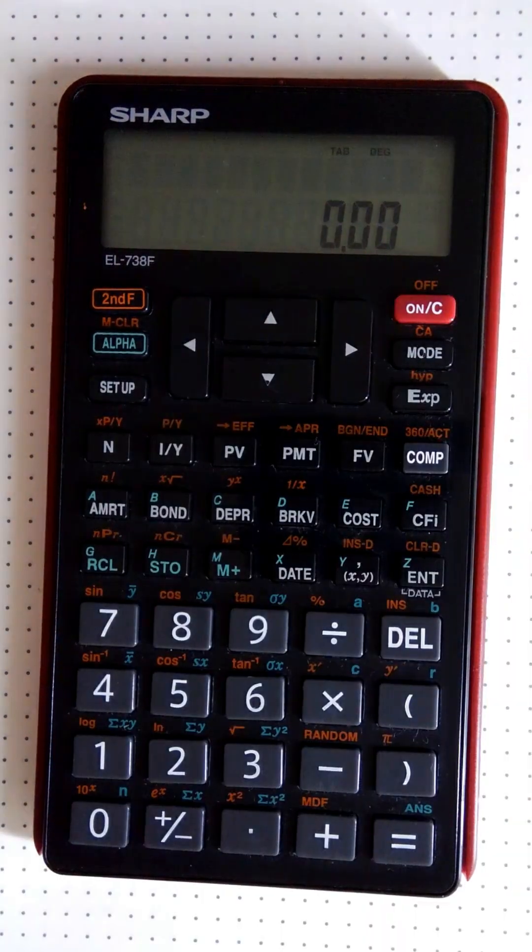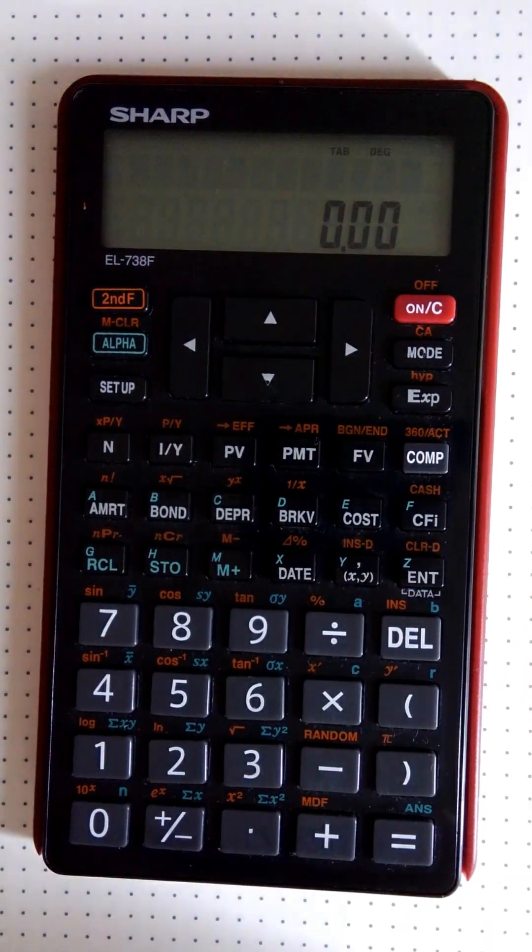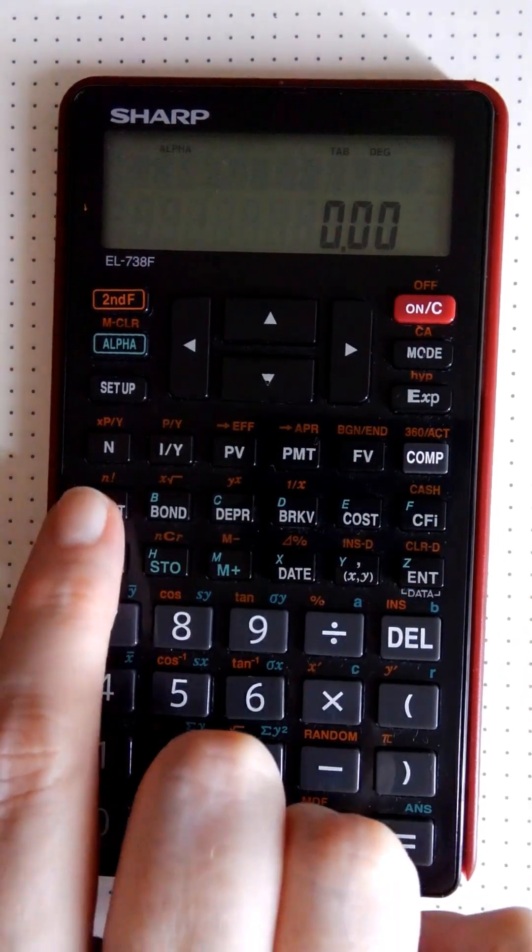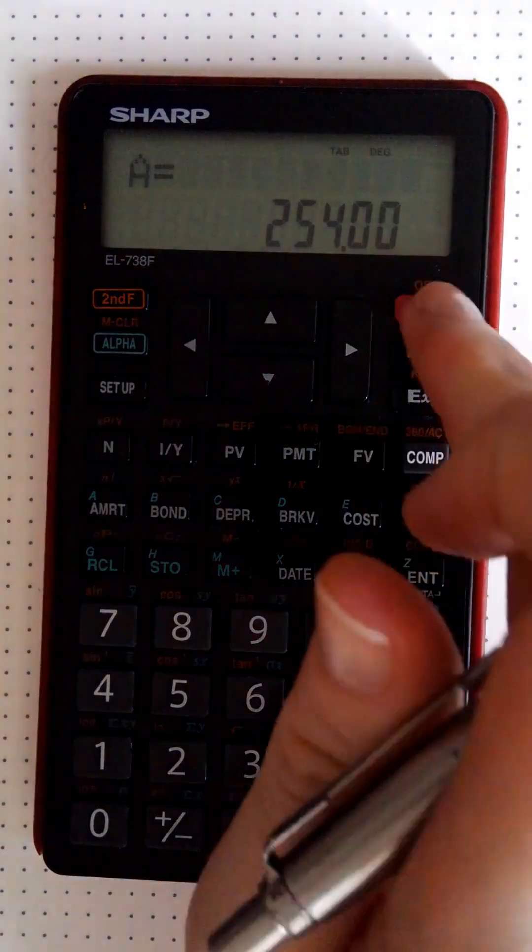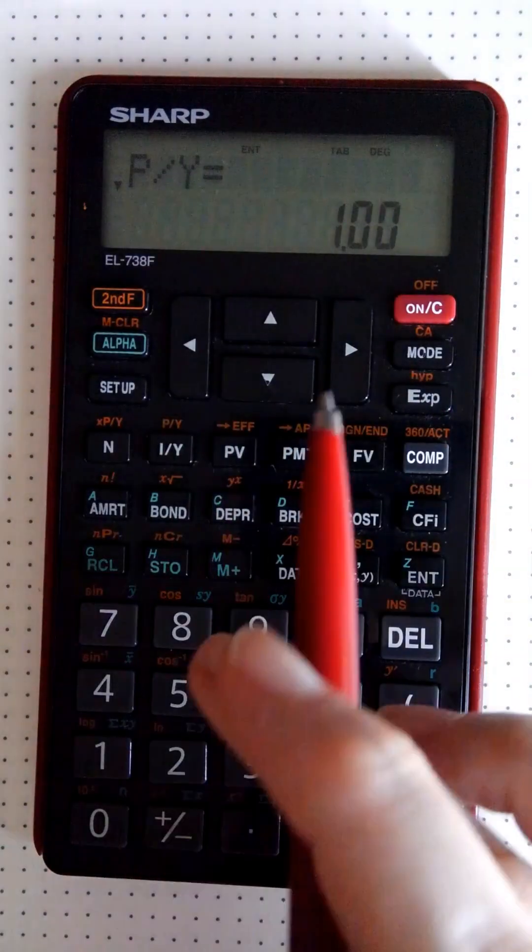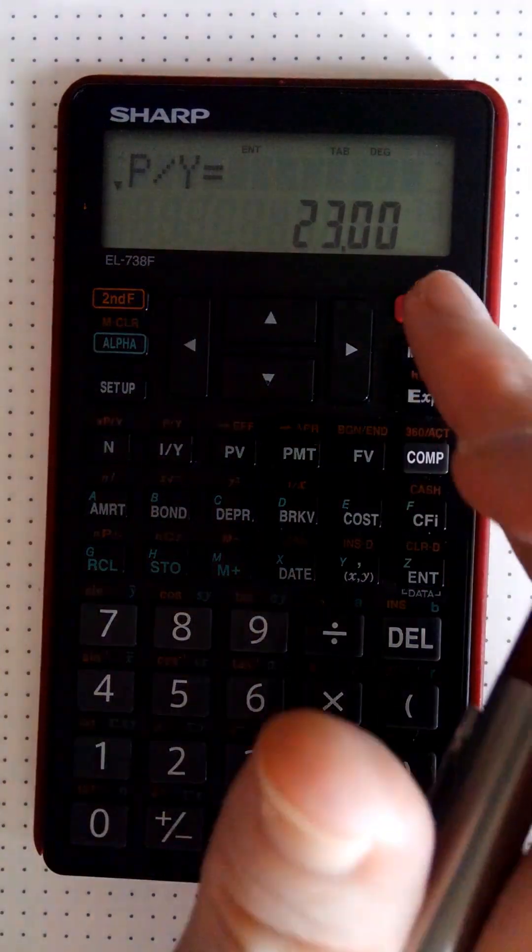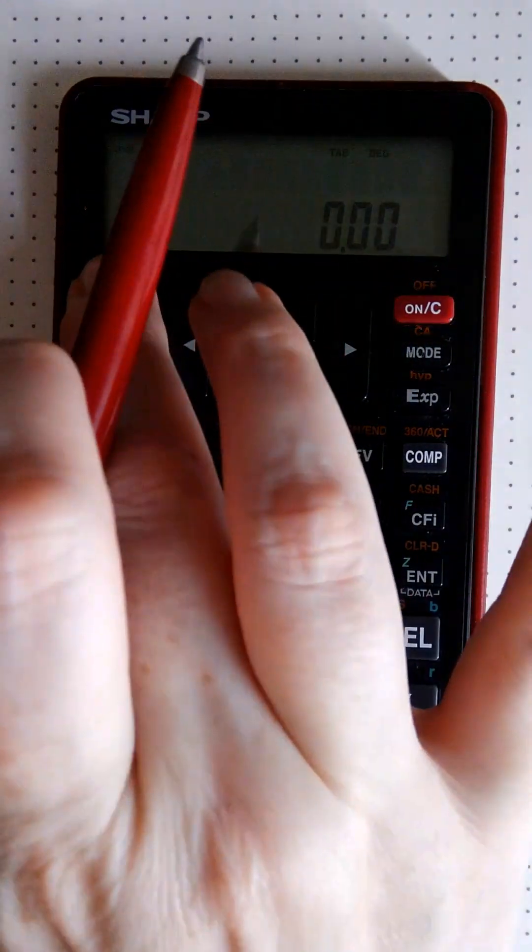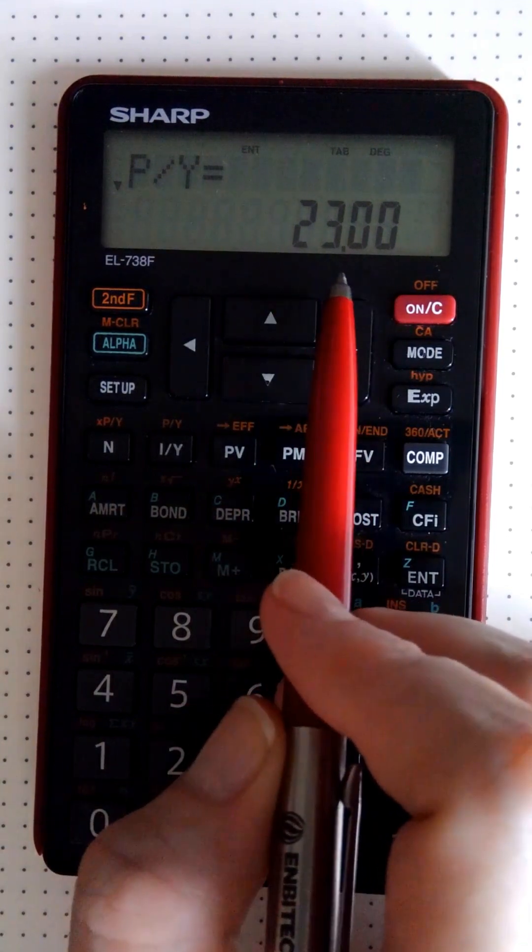Now push ON/C. ON/C has just cleared my screen. Everything in the background is still there. So for example, if I recall A, you'd see there's a value still sitting in A. And if I had to go and store something in PV, so second function PV is default one, let's just make it 23 and store it in there. If we push ON/C and we say second function PV, you see it displays the 23, it hasn't gone away.